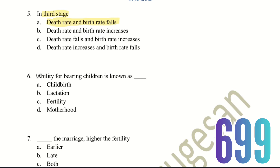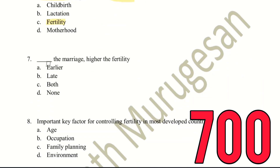Sixth question: ability for bearing children is known as? The choices are childbirth, lactation, fertility, or motherhood. The ability for bearing children is known as Fertility. Seventh question: the earlier the marriage, the higher the fertility. What type of marriage leads to higher fertility? The choices are: earlier the marriage, late the marriage, both, or none.